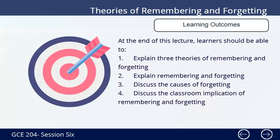Objectives: At the end of this lecture, learners should be able to: 1. Explain three theories of remembering and forgetting. 2. Explain remembering and forgetting. 3. Discuss the causes of forgetting. 4. Discuss the classroom implications of remembering and forgetting.